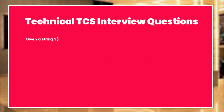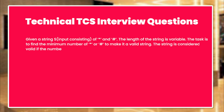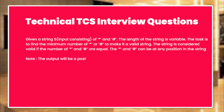Given a string S of star and hash values, the length of the string is variable. The task is to find the minimum number of stars or hashes to make it a valid string. The string is considered valid if the number of stars and hashes are equal. The star and hash can be at any position in the string. Note: the output will be a positive or negative integer based on the number of stars and hashes in the input string.